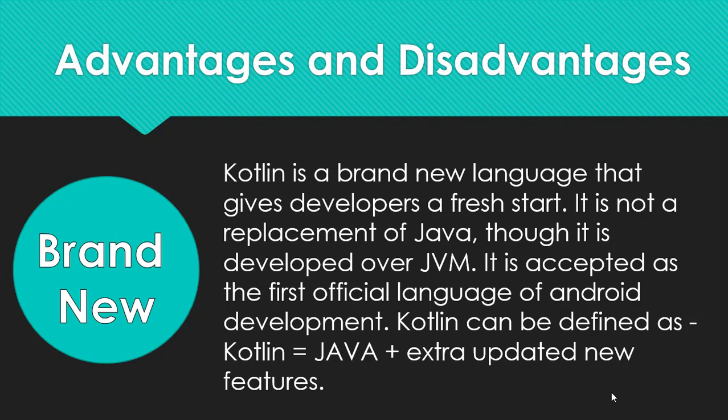Kotlin is accepted as the first official language of Android development. Kotlin can be defined as: Kotlin equals Java plus extra updated new features.